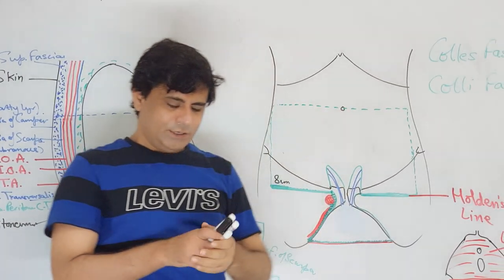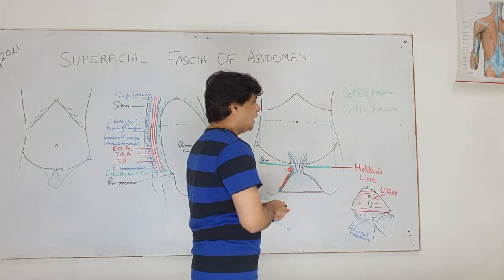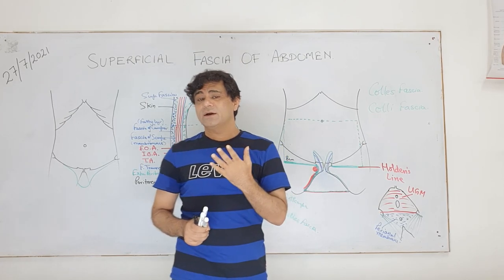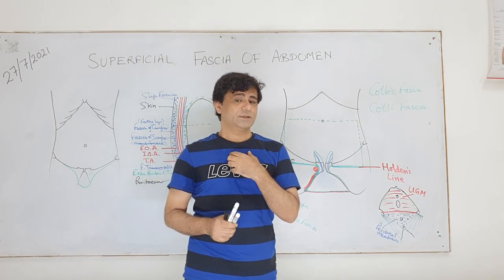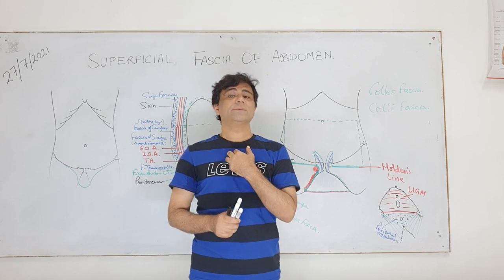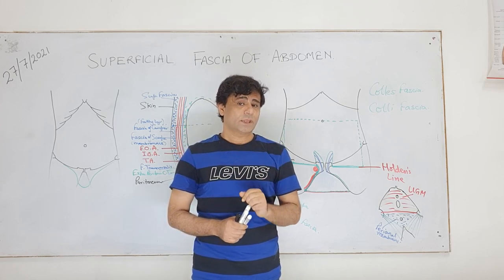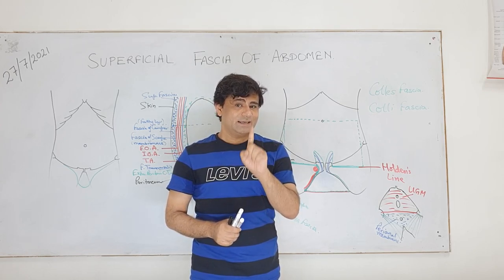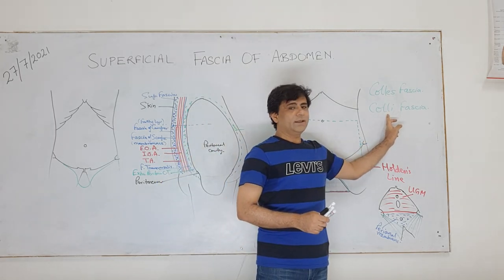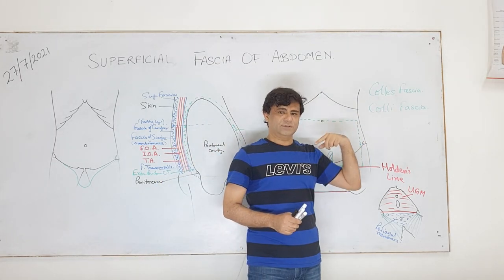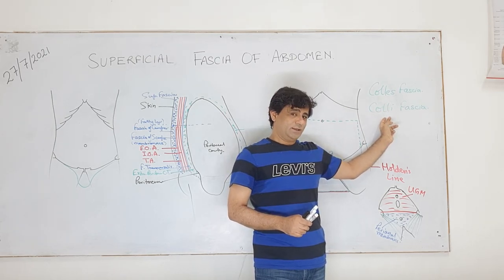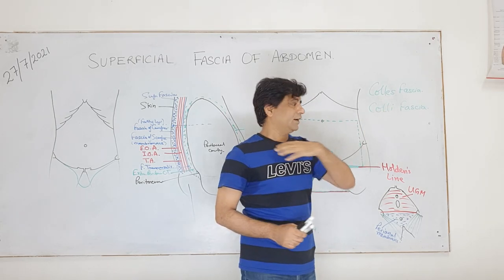Don't confuse them - remember 'I' is something straight - I means for the neck. So fascia of Colli is the deep fascia of the neck.